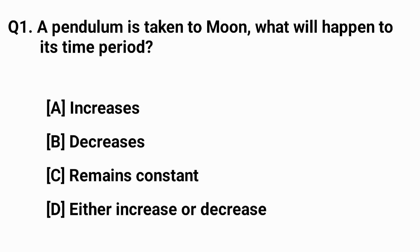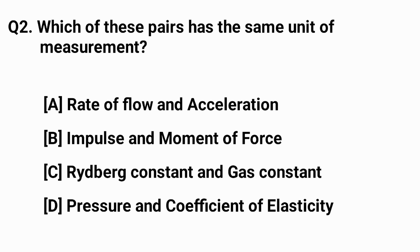Question number one: a pendulum is taken to the moon, what will happen to its time period? The right answer is option A — increases. Question number two: which of these pairs has the same unit of measurement? The right answer is option D.